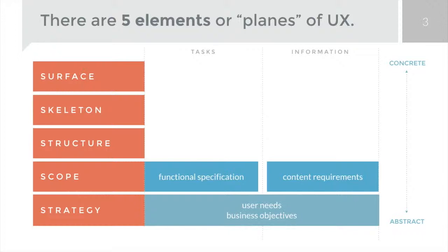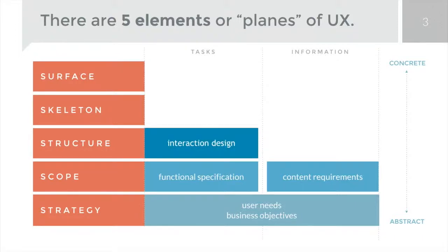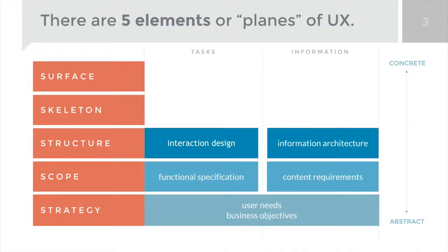From there we move on to the structure plane, which is composed of two parts. On the software side, we're concerned with interaction design — how does the system behave when somebody does something? When I click on a link, what do I get? Am I taken to another page, do I get a series of interactive choices, or do I get streaming video? It's the nuts and bolts of how I interact with what I have in front of me. Information architecture is the arrangement of content elements and information within that space — not just on every screen, but throughout the entire site or application. How much of it is there, how is it organized, and how deep is it?